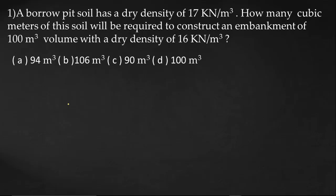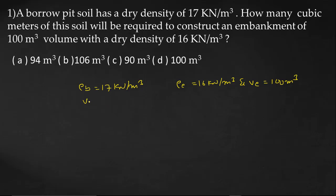First question: A Borrow Pit soil has a dry density of 17 kN/m³. How many cubic meters of soil will be required to construct an embankment of 100 m³ volume with a dry density of 16 kN/m³? So density of Borrow Pit = 17 kN/m³, density of Embankment = 16 kN/m³, volume of Embankment = 100 m³. We need to find the volume of Borrow Pit.